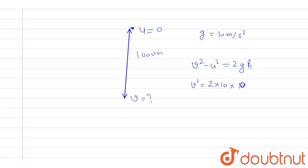Now v square, this will be equal to 2g is 10, h is 1000, so with this we can say that the value of v has come out 100 root 2.